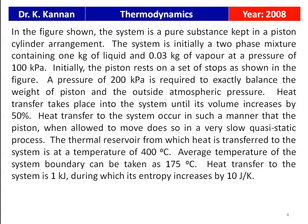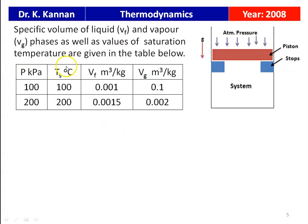A pressure of 200 kPa is required exactly to balance the weight of the piston and the outside atmospheric pressure. Heat transfer takes place into the system until the volume increases by 50%. The heat transfer occurs in such a manner that the piston, when allowed to move, does so in a very slow quasi-static process. The thermal reservoir from which heat is transferred is at 400°C. The average temperature of the system boundary is taken as 175°C.